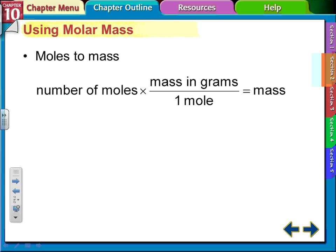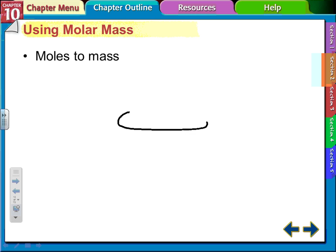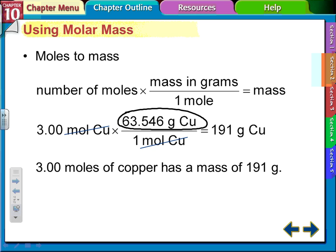We're going to do moles to mass conversion. To do that, we use a conversion factor. We want to find the mass in grams — we almost always use grams in chemistry. For example, finding the mass of three moles of copper: the value 63.546 grams per mole comes from the periodic table. So one mole of copper weighs 63.5 grams. We had three moles, so we multiplied 63.5 by 3, the moles canceled out, and we ended up with 191 grams.